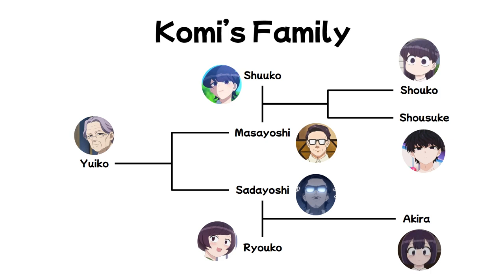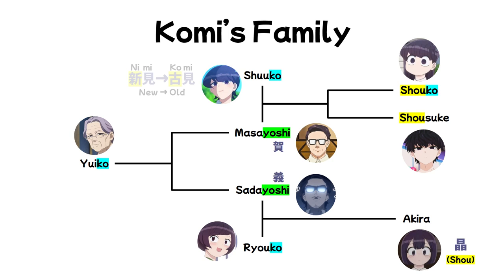The Komi family names don't really have puns, but there are patterns. All the girls except Akira have names ending in 'Ko': Shouko, Shuko, Ryoko, Yuko. Masayoshi and Sarayoshi share the same suffix, though with different kanji. All the cousins have the sound 'Shou' in their names — Shouko and Shousuke are obvious, and Akira's kanji can also be read as 'Shou.' Also, Komi-san's mother Shuko's maiden name was Nimi — 'Ni' means 'new,' while 'Ko' in her married name Komi means 'old,' so there's a bit of wordplay there.